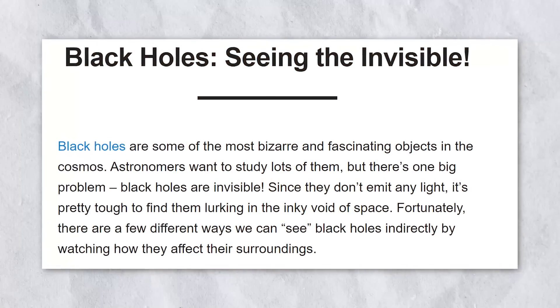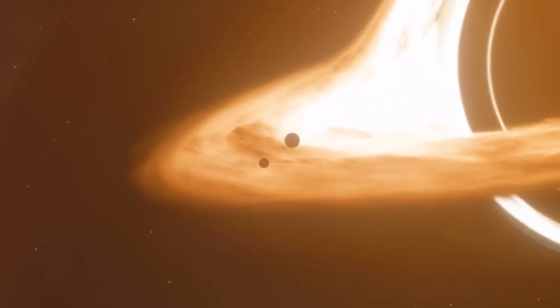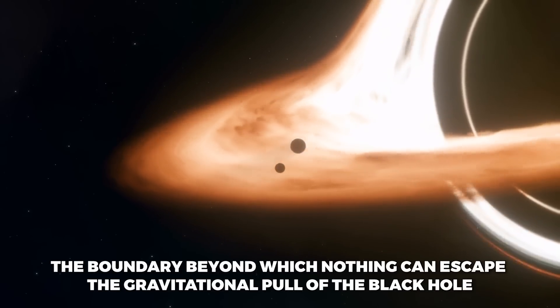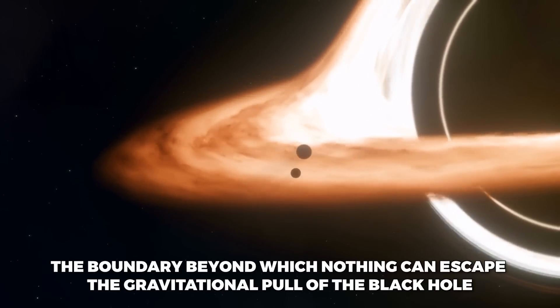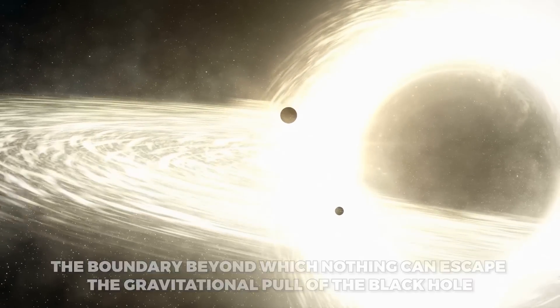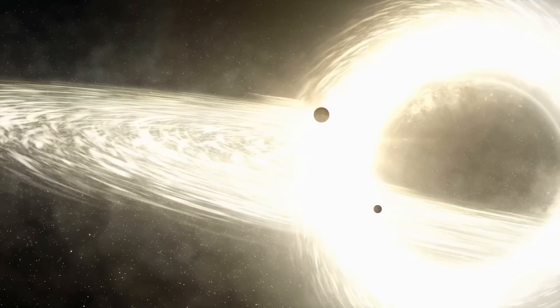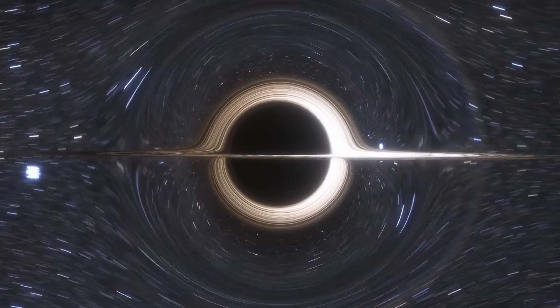Black holes are invisible to the naked eye and can only be detected through their effects on nearby matter. Black holes are characterized by their event horizon, which is the boundary beyond which nothing can escape the gravitational pull of the black hole, not even light.